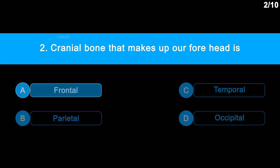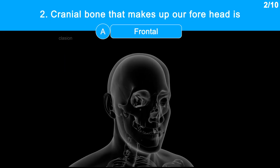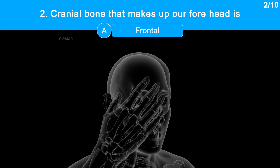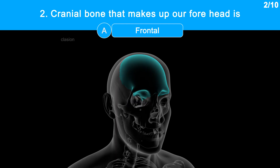The correct answer is Option A: Frontal. Once touch your forehead — it is made up of the frontal bone. It is located above the nasal bones and in front of the parietal bones. This bone also forms the upper portion of our eye sockets.